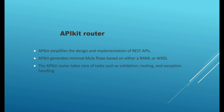Let's recall what we have learned in this session. We have seen how API Kit Router reads the information from the RAML file and helps in the design and implementation of REST APIs, which reduces development effort. API Kit Router reads the information from the API specification, generates Mule flows, takes care of input request validation, routing of flows, and exception handling. That's it about API Kit Router. Thank you.